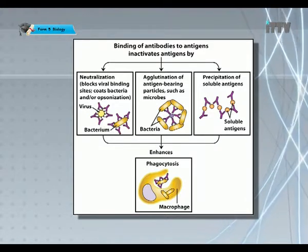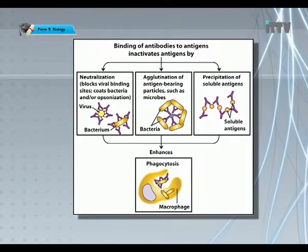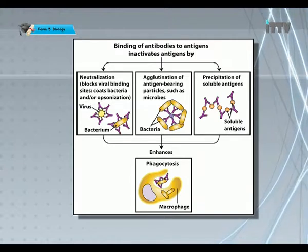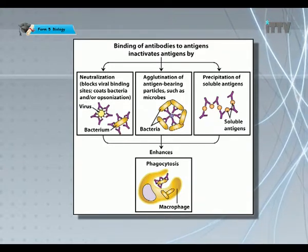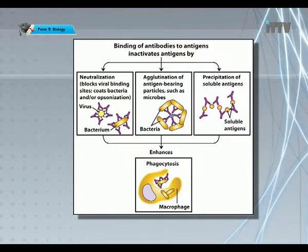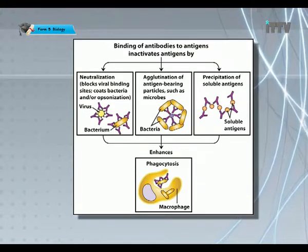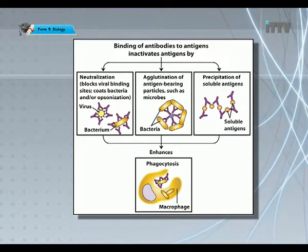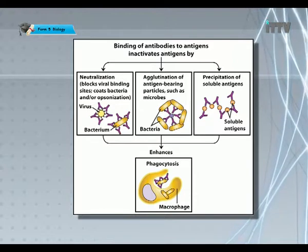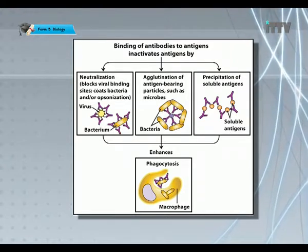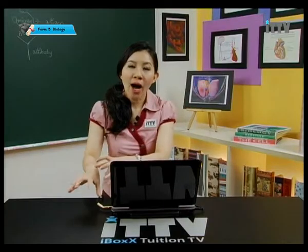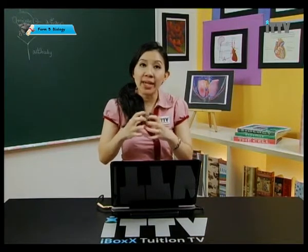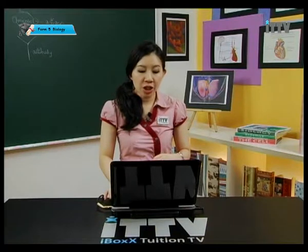The second mechanism by which antibodies inactivate antigen is agglutination — the agglutination of antigen-bearing particles such as microbes. After agglutination, this enhances phagocytosis. The last method is precipitation: antibodies bind to soluble antigens causing them to precipitate, and these immobile precipitates are easily engulfed by phagocytes. Precipitation means to draw out from solution and make them solid — the antibodies cause the antigens to solidify, precipitate, and coagulate together.